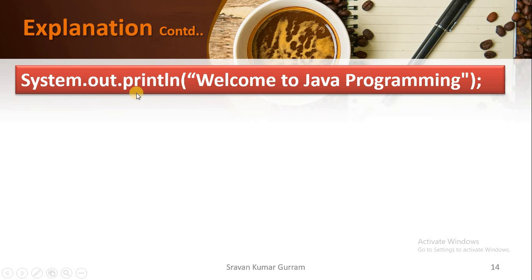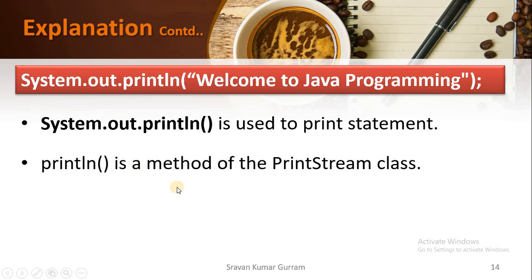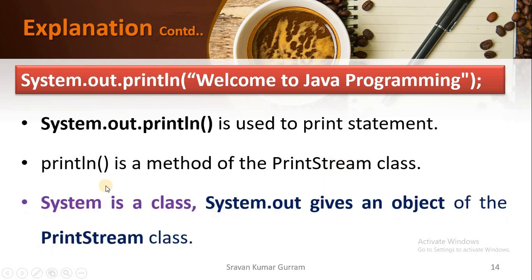We use System.out.println with text inside double quotes — whatever text you write there will be printed as output. System.out.println is used to print something. println is a method of the PrintStream class. To call println, you need an object of PrintStream class. Writing System.out gives an object of PrintStream class, and with that we call println to print text or variable values on the monitor.